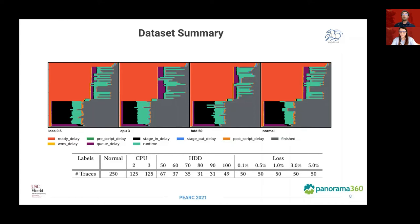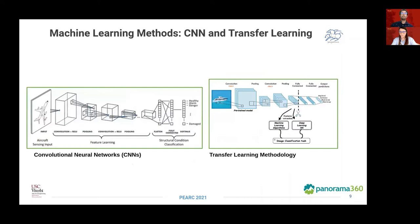Now Patricia will continue on the machine learning part of the study. Having generated these high-resolution visualizations of the Gantt charts, we aim to leverage the advances in computer vision. We employed convolutional neural networks that automatically extract relevant hierarchical features from image data. The network consists of a sequence of layers, like convolutions, pooling, and normalization layers, with nonlinear units between them. The layers in the sequence learn progressively abstract representations of the input data.